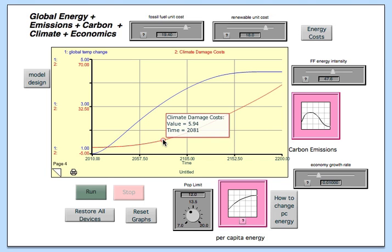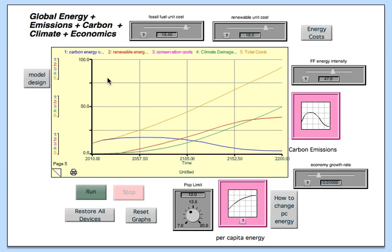So that's one of the costs, and then that's combined with all the other costs. So the cost of carbon-based energy, the cost of renewable energy here, the cost of conservation, in other words, reducing the per capita energy demand here, and the climate damages, which we just talked about, that combines to give the total cost.